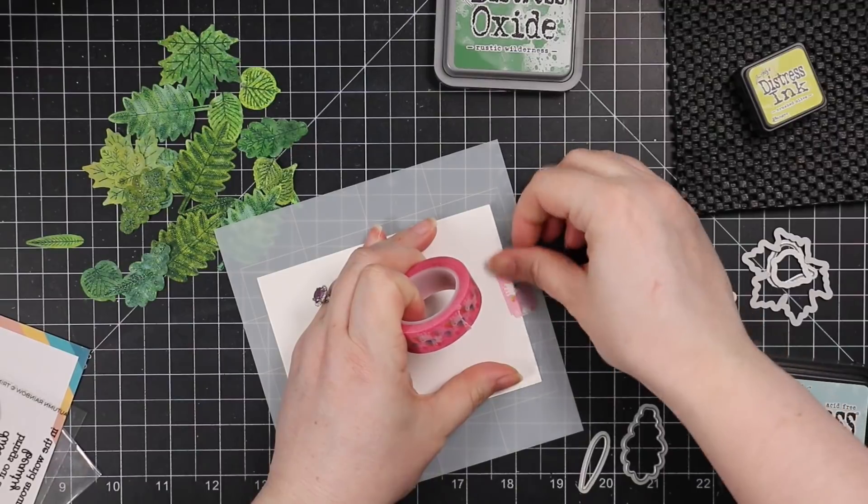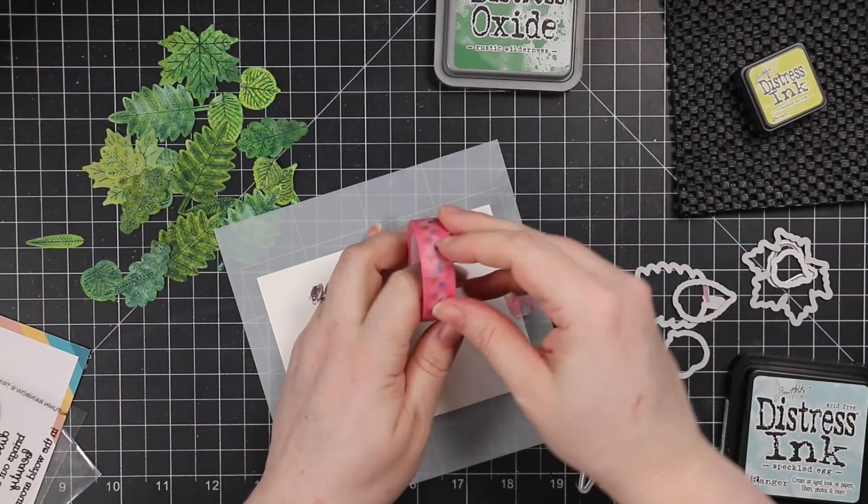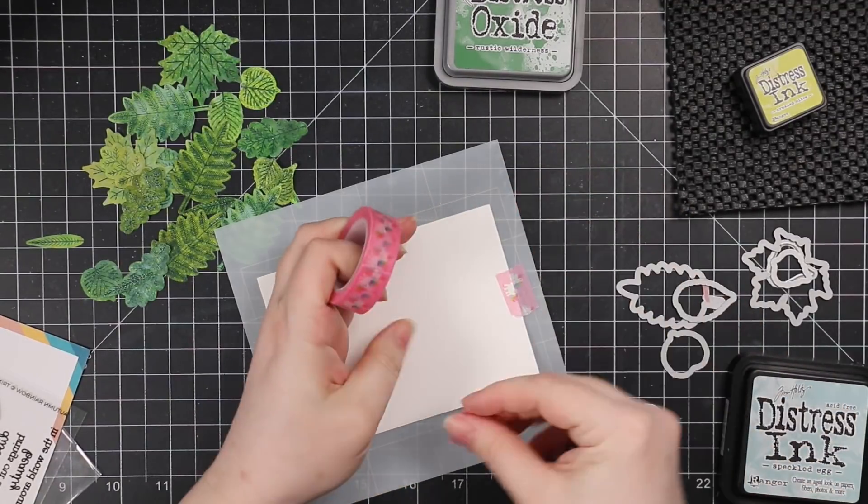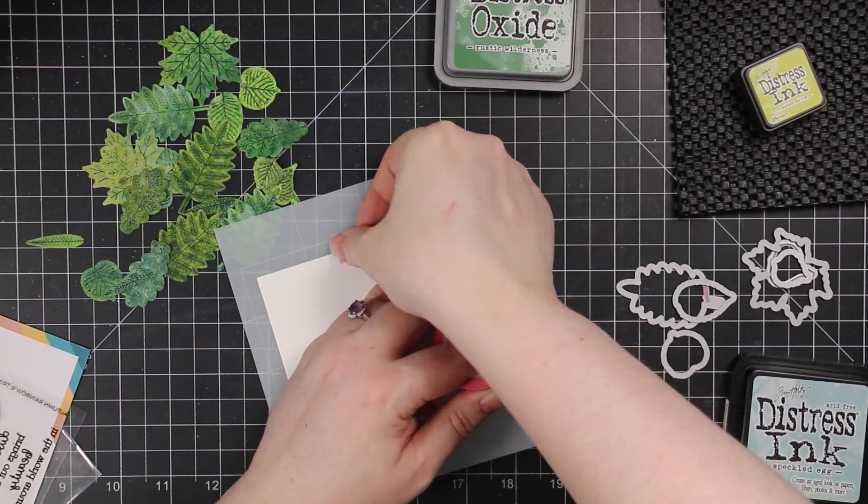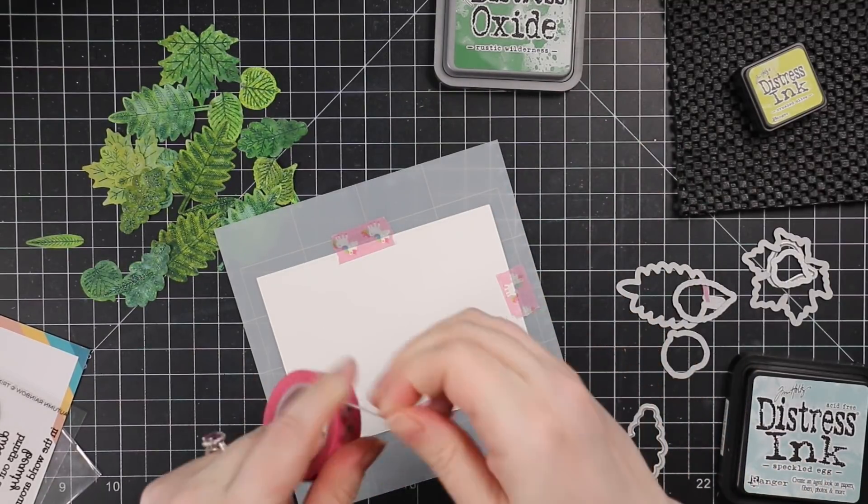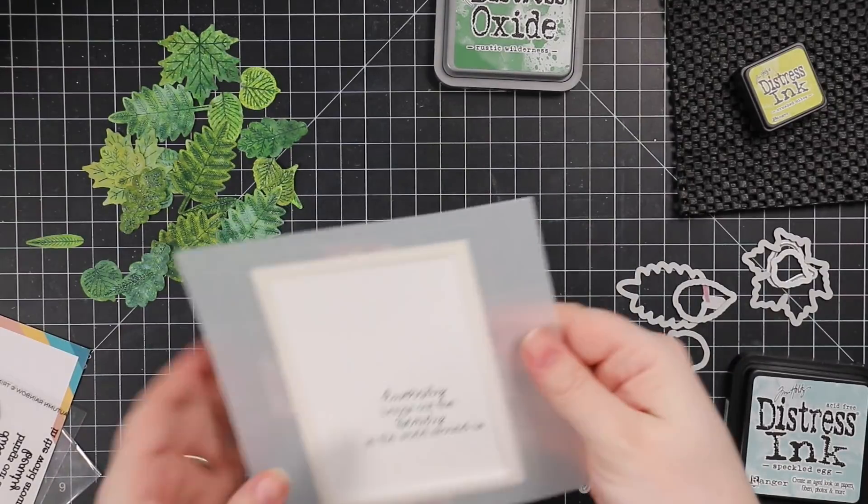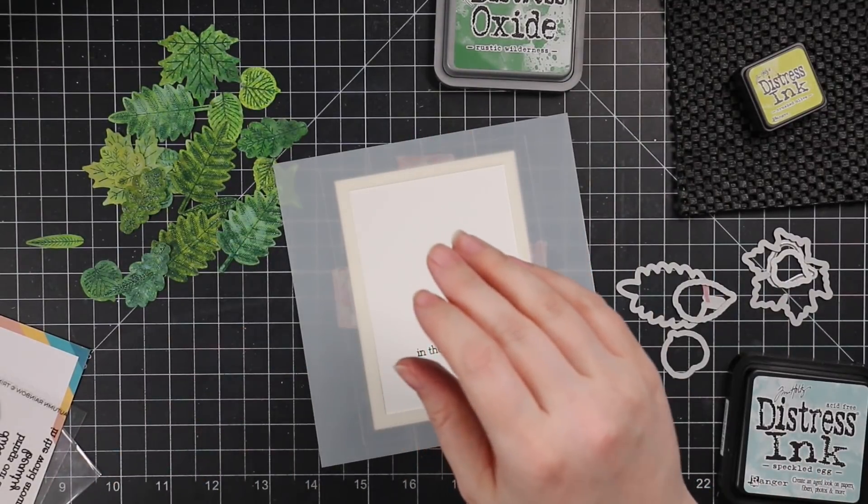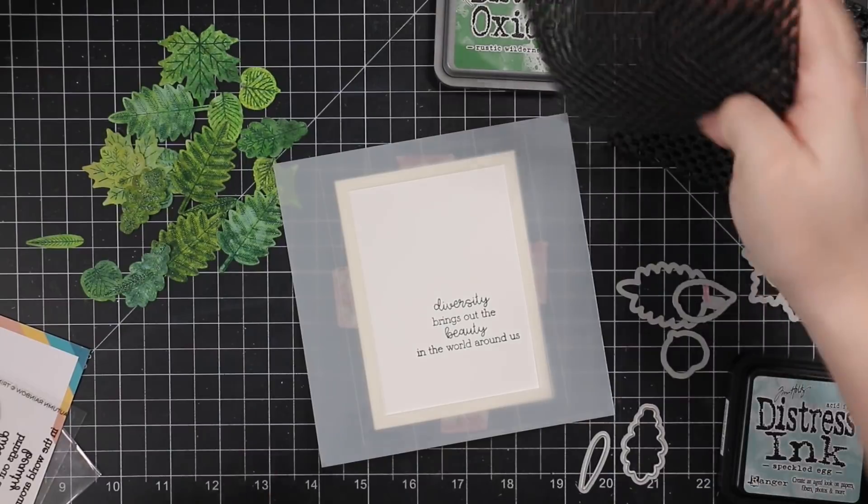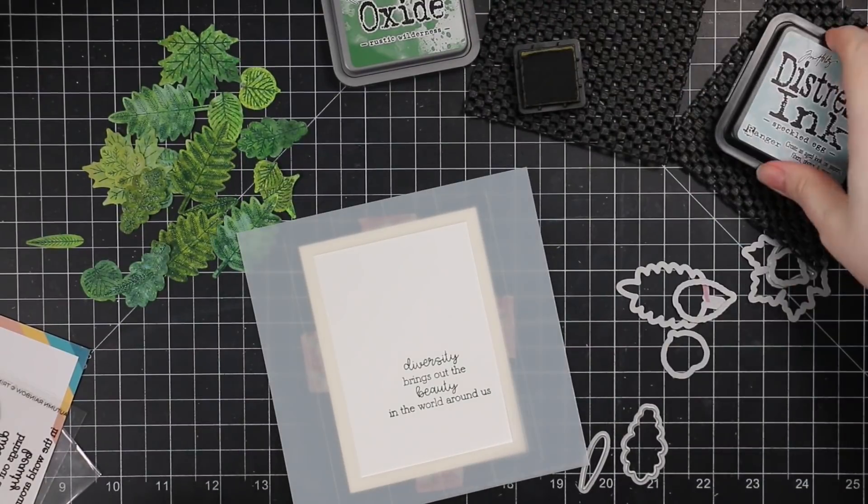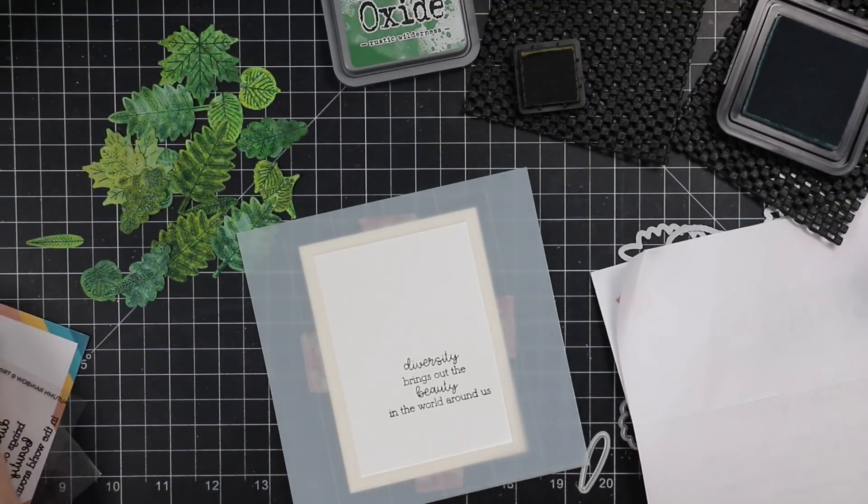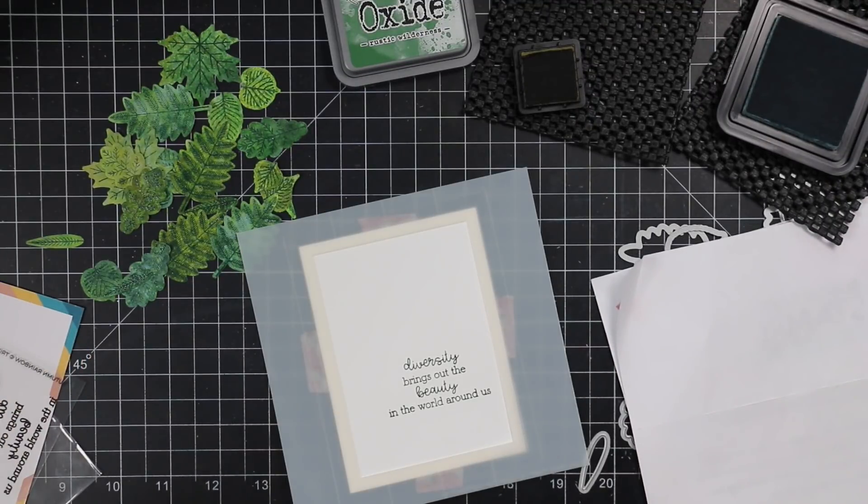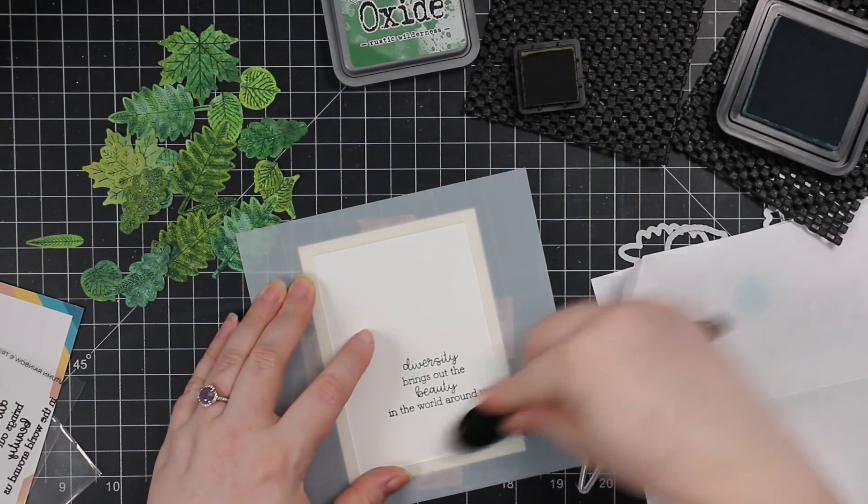So heat emboss the sentiment first. And then I lined up my little background here on the stencil and these stencils have etch lines, all multiple etch lines so that everything can line up. So I just flipped everything over and I just lined up my rectangle with the emboss lines on the stencil. And then that way that kind of just masks off a little bit of a perimeter. And then I'm going to do some very simple ink blending and I'm going to use crushed olive distress ink and speckled egg distress ink.